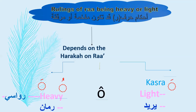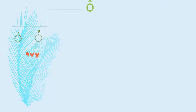If Ra has Sukun, look at the previous letter. If the previous letter has Fathah or Damma, Ra is heavy. For example, 'Sakhharna al-jibala' — Ra has Sukun, preceded by Kha which has Fathah, so it is heavy: 'Sakhhar'. Also 'Murshida' — Ra is preceded by Damma: 'Mur', heavy.